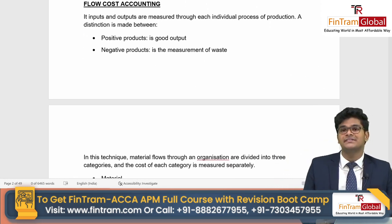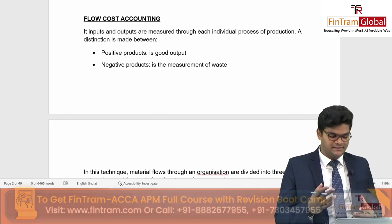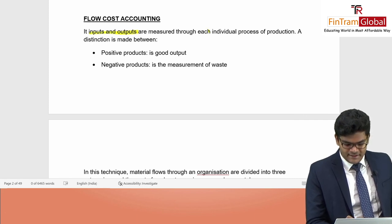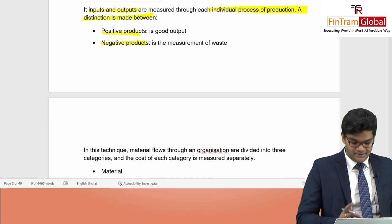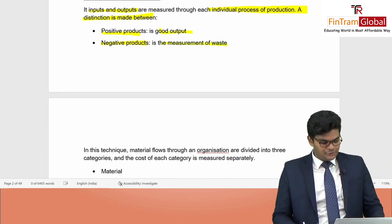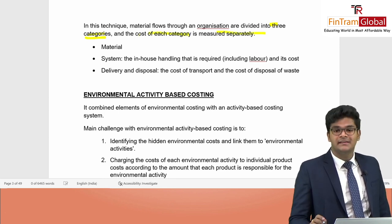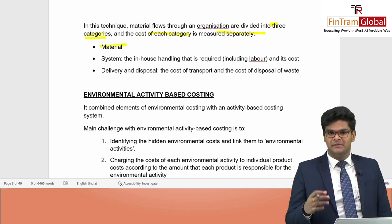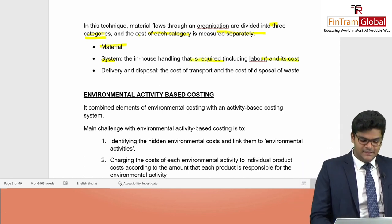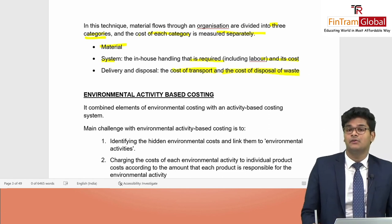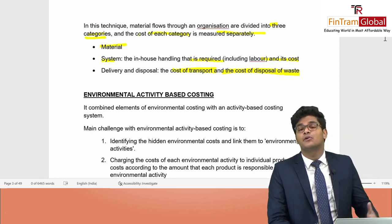Flow cost accounting is similar to input-output analysis but with different categorization. Inputs and outputs are measured through each individual process of production, with a distinction between positive products (good output) and negative products (waste). The materials flow is divided into three categories: material (raw materials), systems (in-house handling including labor), and delivery and disposal (transport cost and cost of waste disposal). In each category, positive and negative outputs are identified.